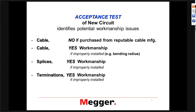But we are concerned about the cable from a workmanship issue — for instance, bending radii or pulling force on cables, which can affect the cable itself. Then we look at splices, which is a workmanship issue if improperly installed, or maybe there were some compromises done to install a splice. And the same is true for terminations.